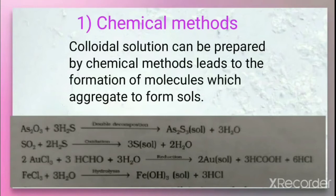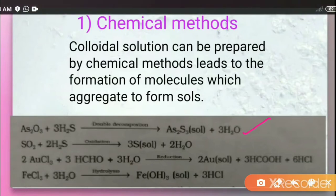The first example of a chemical method is a double decomposition reaction. The sulfide sol of arsenic (As₂S₃) can be prepared by passing H₂S gas through a dilute solution of arsenic oxide in water, giving us arsenic sulfide sol.